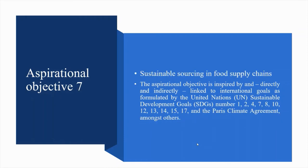Aspirational objective 7: Sustainable sourcing in food supply chains. The aspirational objective is linked to the UN Sustainable Development Goals: No. 1 No Poverty, No. 2 Zero Hunger, No. 4 Quality Education, No. 7 Affordable and Clean Energy, No. 8 Decent Work and Economic Growth, No. 10 Reduced Inequalities, No. 12 Sustainable Production and Consumption, No. 13 Climate Action, No. 14 Marine Protection, No. 15 Biodiversity, No. 17 Partnerships, and the Paris Climate Agreement.